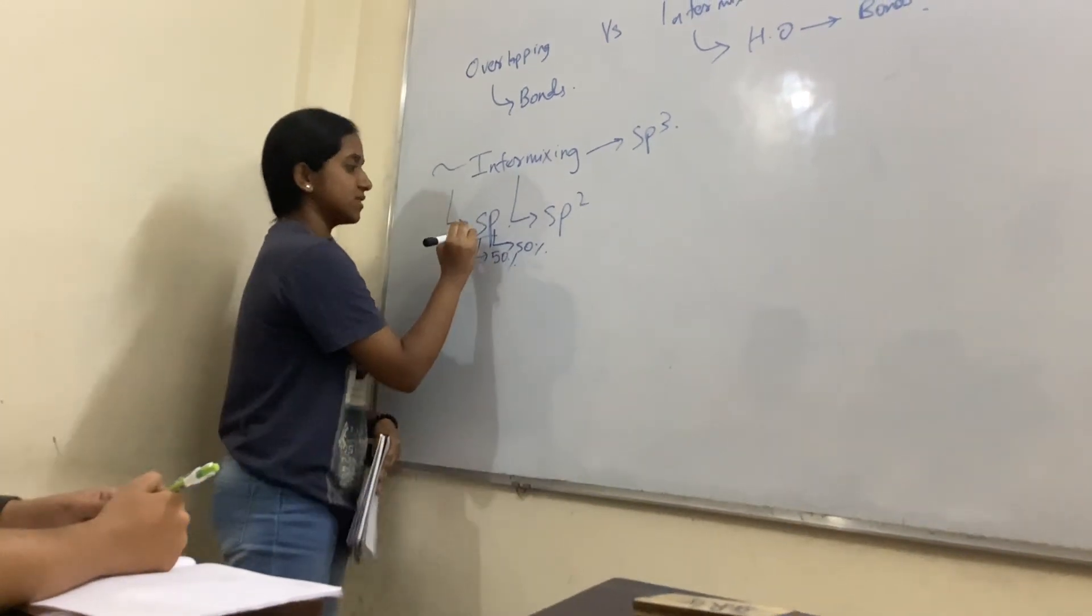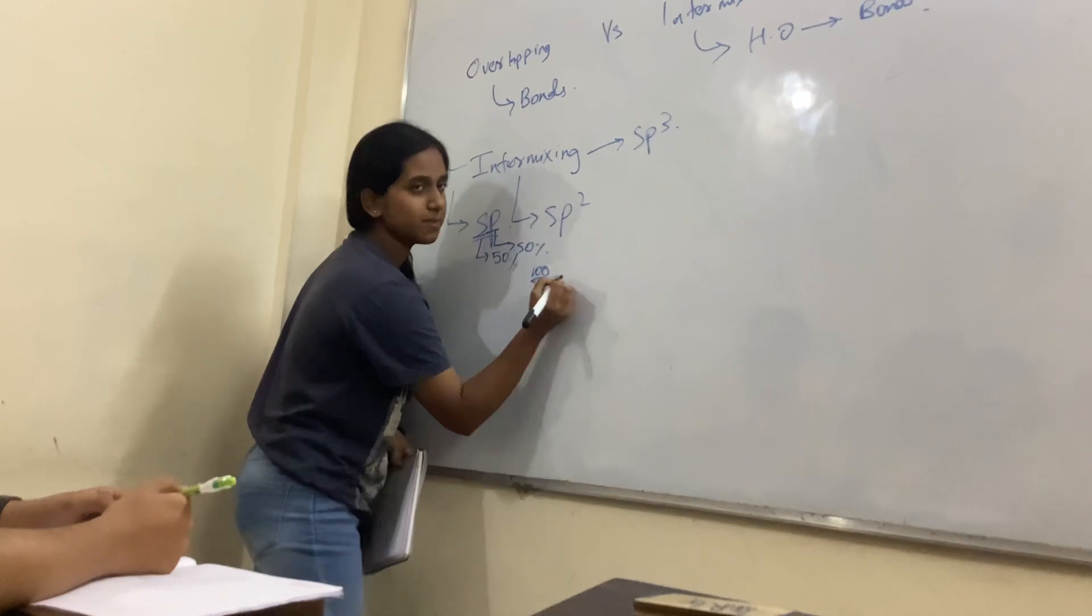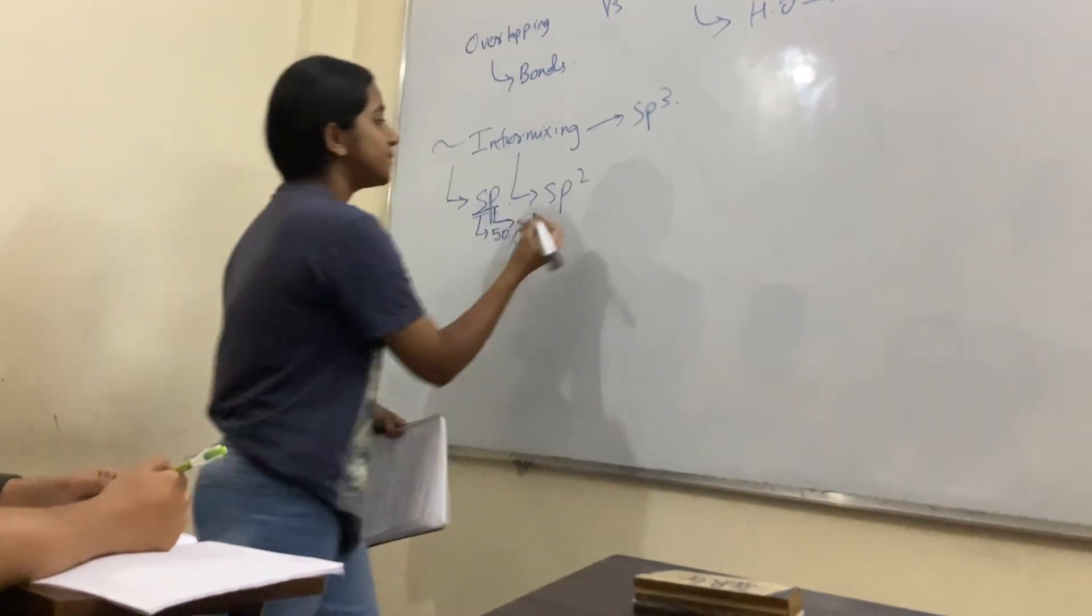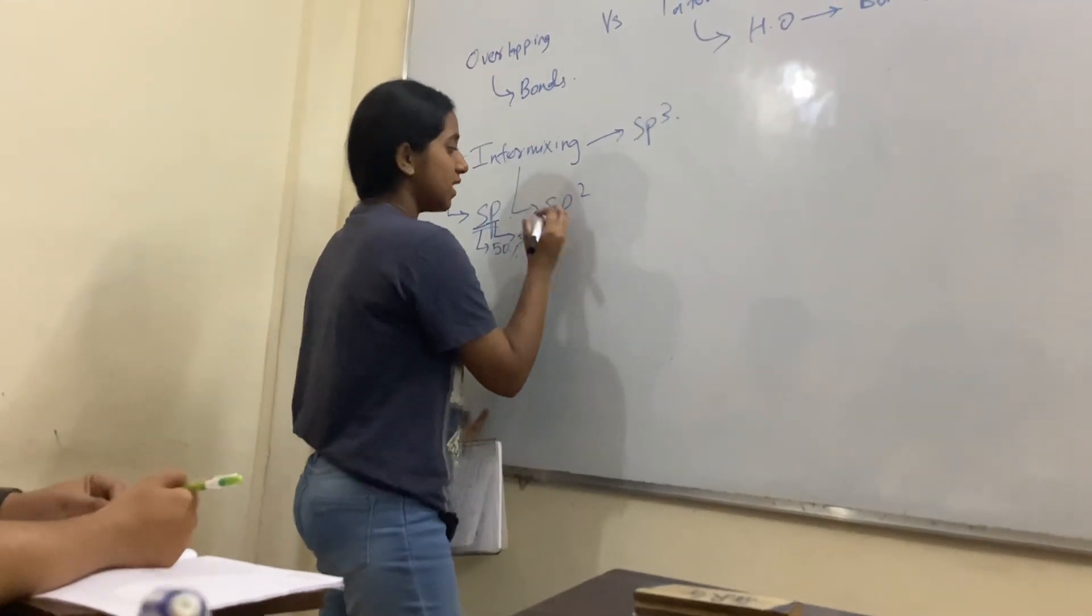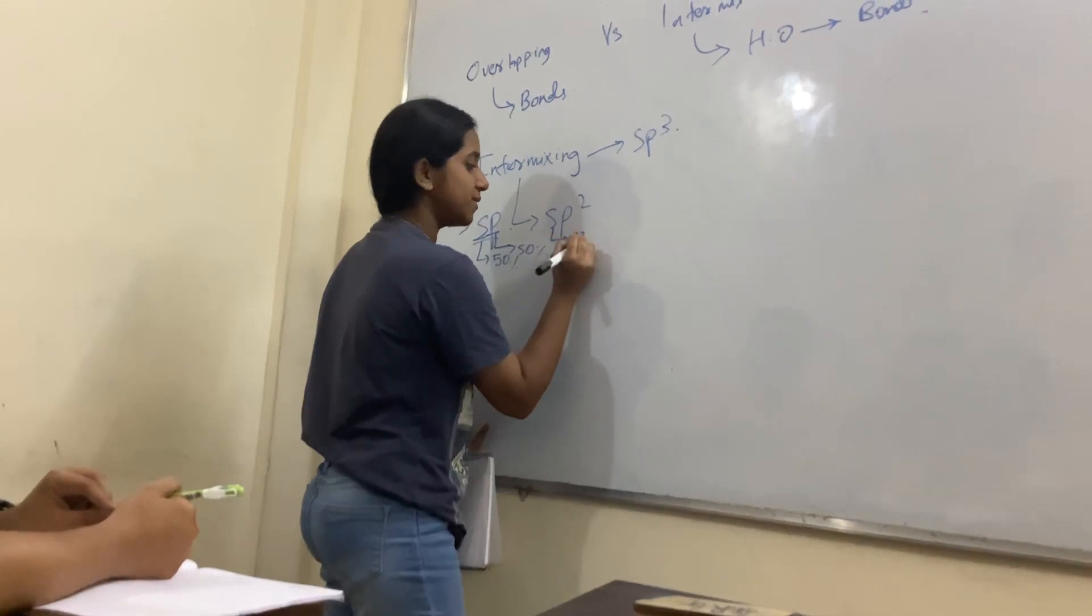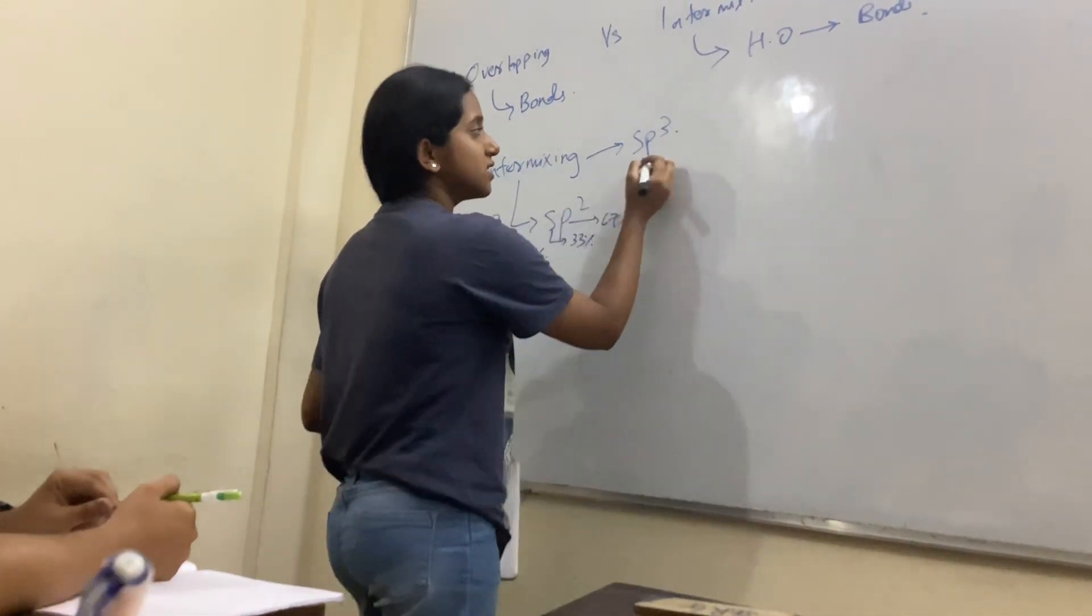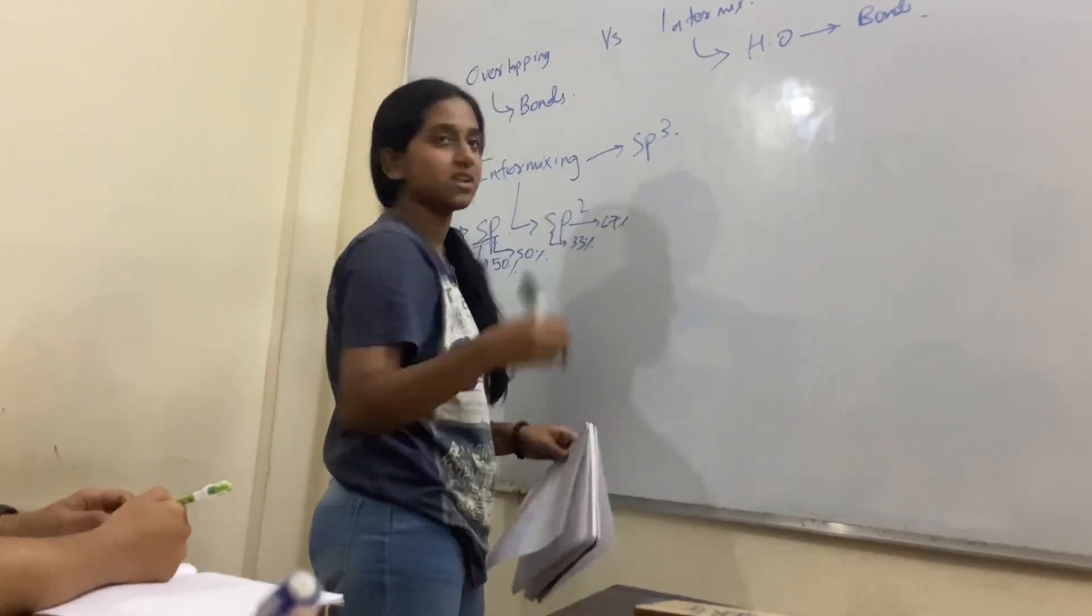Let's see how we add orbitals to this. In SP2 hybridization, there is 1 S orbital and 2 P orbitals. The S character is 33% and the P character is 67%.